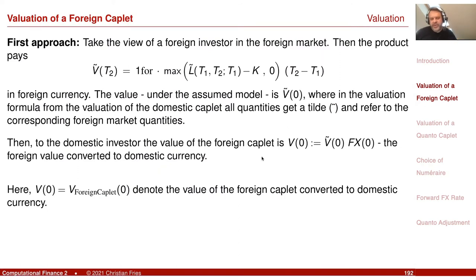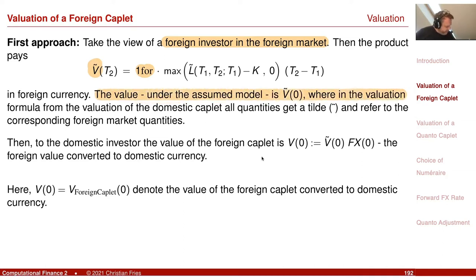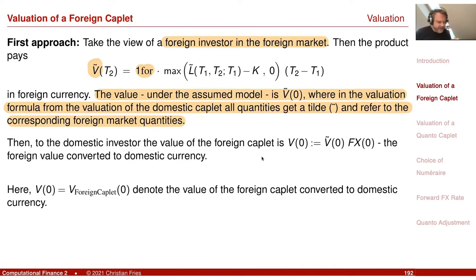The first approach is taking the view as a foreign investor and moving into the foreign market. We look at the payoff in foreign currency and, under the assumed Black-Scholes model, get a foreign valuation formula where all domestic quantities are replaced by the corresponding foreign market quantities. Then the domestic investor can buy this foreign Caplet at the price corresponding to the foreign value converted to domestic currency at evaluation time.